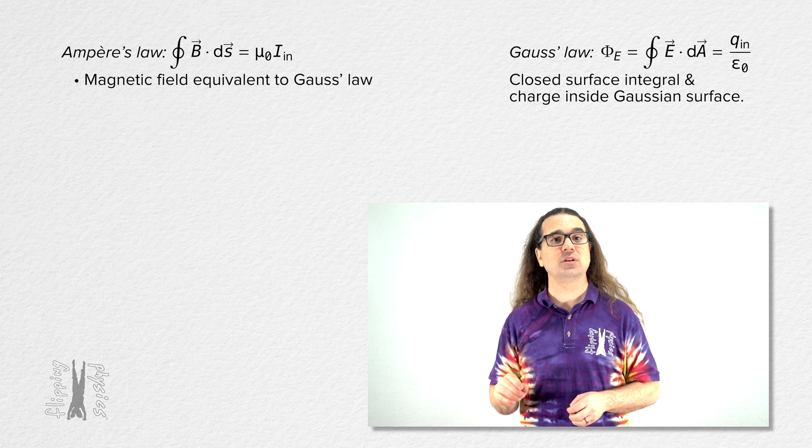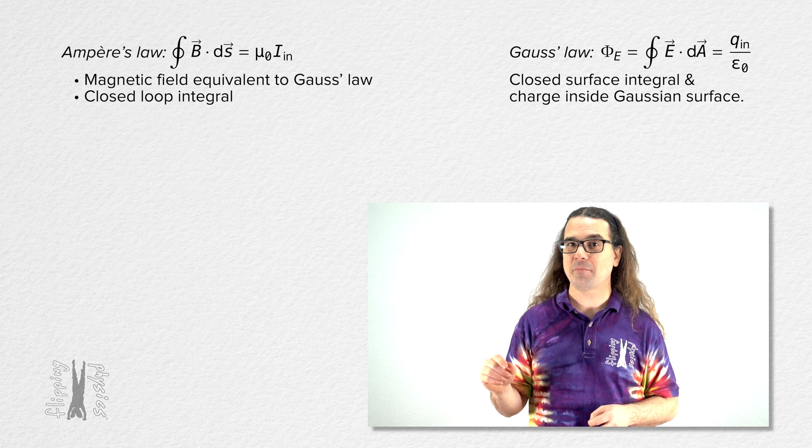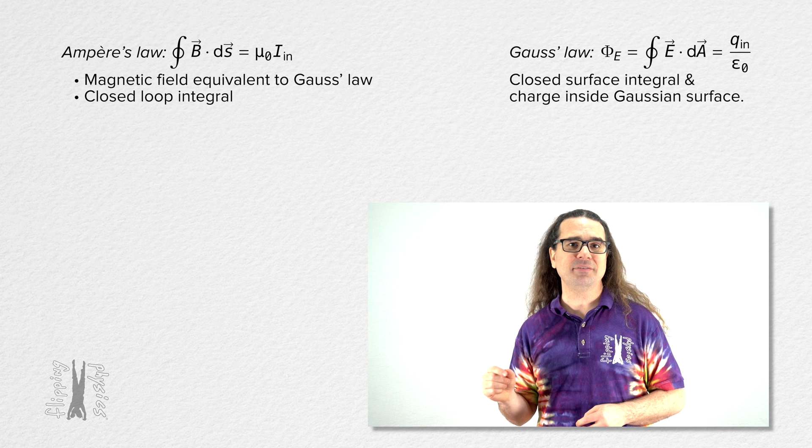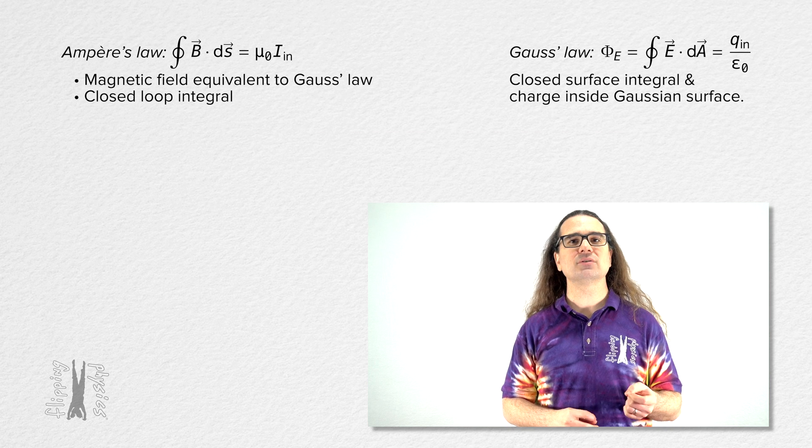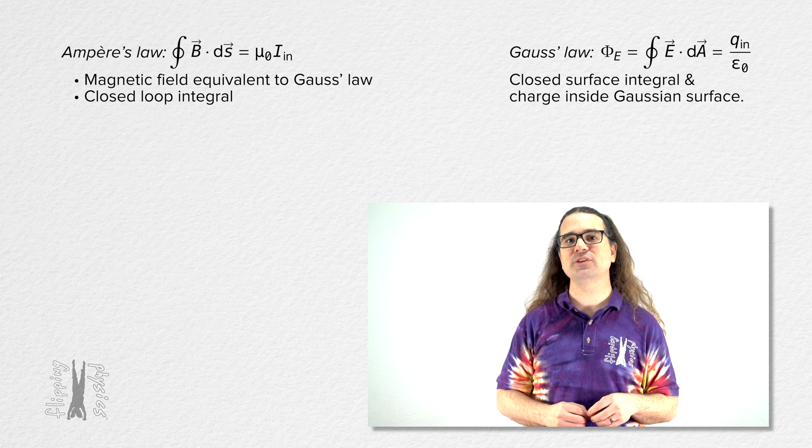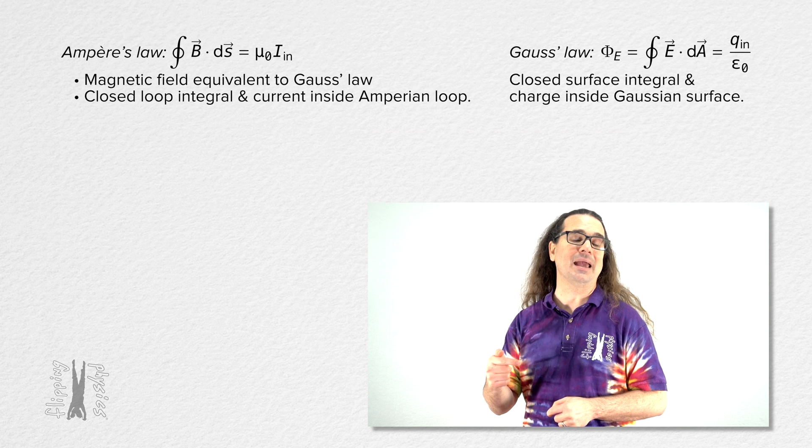Ampere's Law states that the closed-loop integral of the dot product of the magnetic field and the infinitesimally small distance dS along the direction of an Ampereian loop equals the magnetic permeability of free space times the current inside the Ampereian loop.